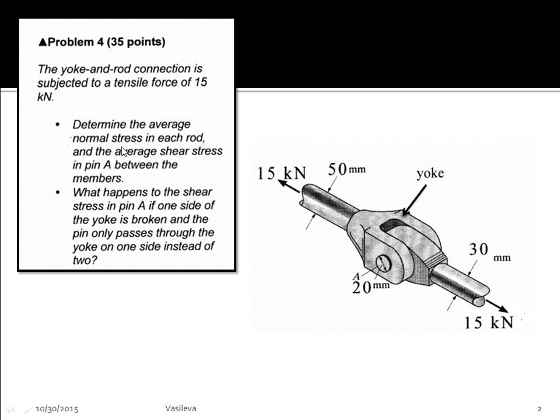We have to determine the average normal stress in each rod and the average shear stress in pin A between the members. Part 2 asks what happens to the shear stress in pin A if one side of the yoke is broken and the pin only passes through the yoke on one side instead of two.